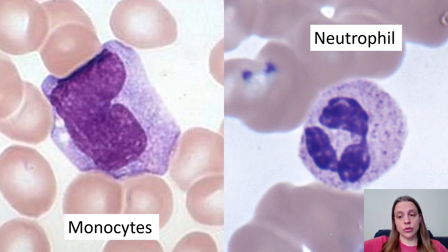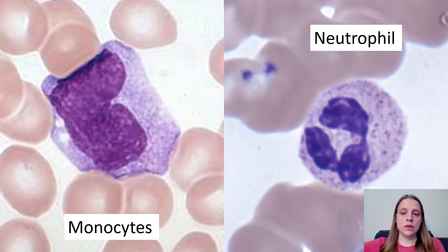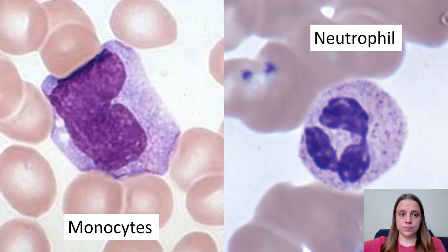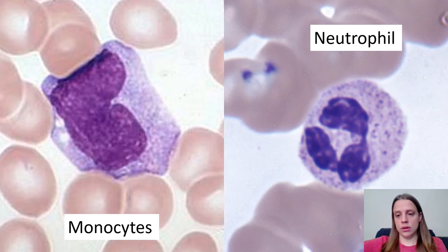Sometimes neutrophils and monocytes can be confused because they have a similar color, and because sometimes the monocyte might look like it has granules, or the neutrophil is really faded and you can't tell whether it has granules or not. In that case, first look at size — the neutrophil will be about two to three times the size of a red blood cell, whereas the monocyte is much larger; you could fit four or five red blood cells inside it. Also look at the nucleus: the monocyte will have a nucleus shaped like a kidney bean, whereas the neutrophil will have the irregular, multi-lobed nucleus we talked about earlier.